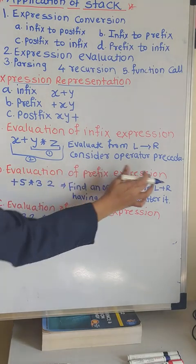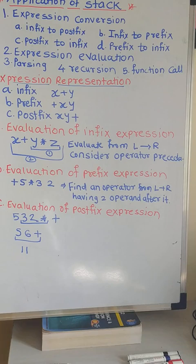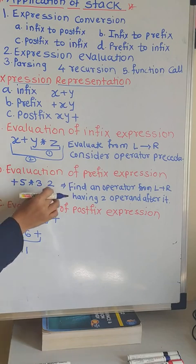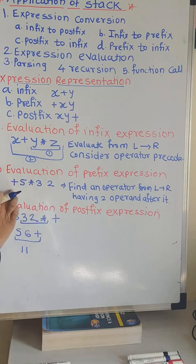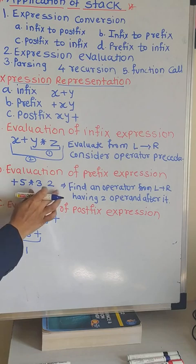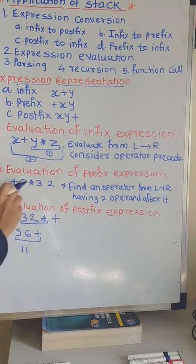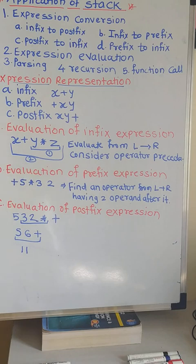Next is evaluation of a prefix expression. How to evaluate the prefix expression? The given example is plus 5, into 3 and 2. Here, after the plus operator there is only one operand, and after the multiplication operator there are 2 operands: 3 and 2. Find an operator from left to right having 2 operands after it. After this operator, if there are 2 operands, then apply this operator on those operands.